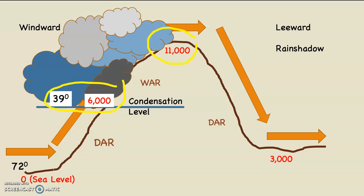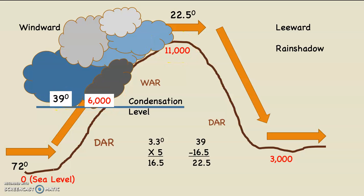Now the air is going to rise from 6,000 up to 11,000 feet — that's 5,000 feet. We are now going to take the WAR, since the relative humidity is 100% throughout that entire expanse from 6,000 to 11,000. The WAR, which is 3.3 degrees Fahrenheit per thousand feet, multiplied by 5 for 5,000 feet. 3.3 times 5 is 16 and a half.